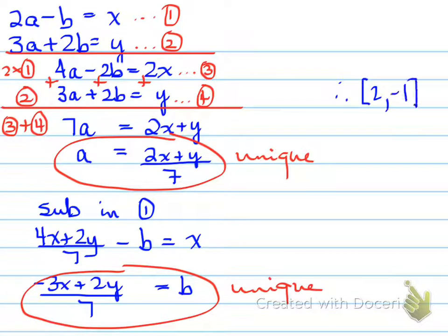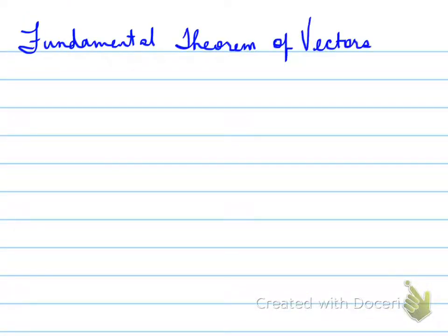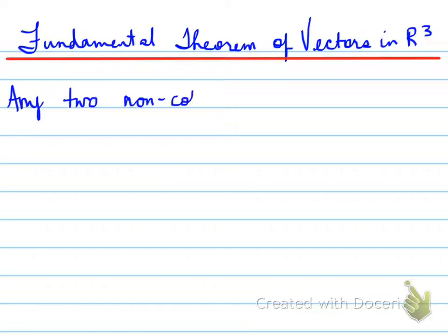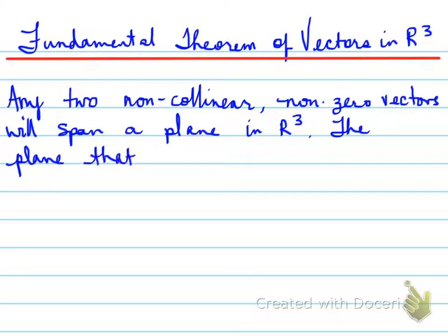Okay, so again, recap: those two points will span R2 because they result in a unique solution for both scalar values A and B. Now let's go on to the fundamental theorem of vectors in three-space. Any two non-collinear, non-zero vectors will span a plane in R3.